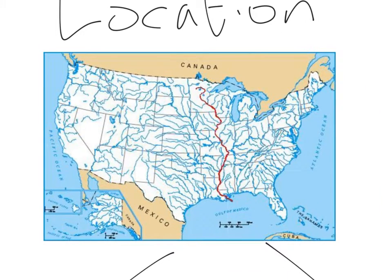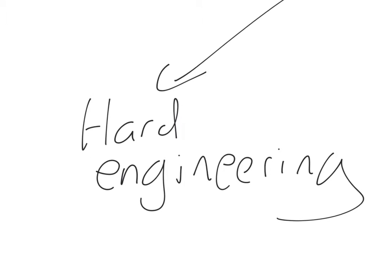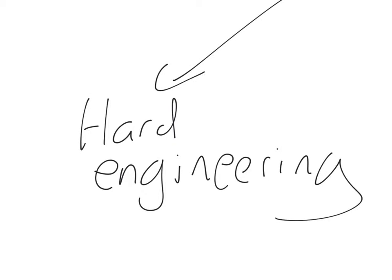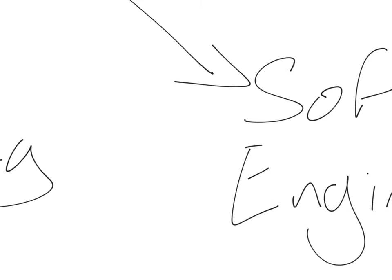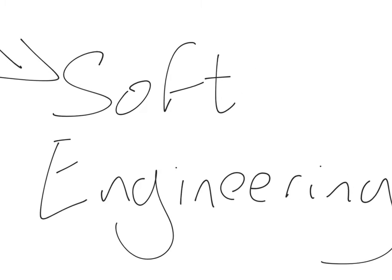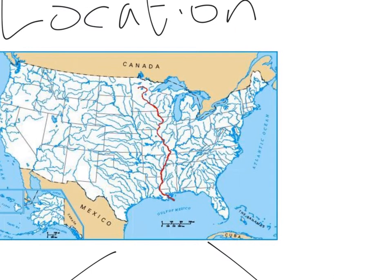In terms of location, you can see here that the Mississippi is clearly an American river. It drains a large part of the United States, flowing from the north all the way to the south with its mouth feeding out into the Gulf of Mexico. This case study is focused on evaluating the hard engineering and soft engineering strategies used to control this river as it passes through America.